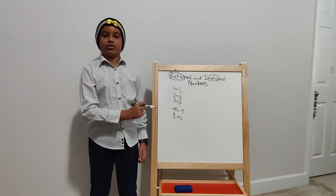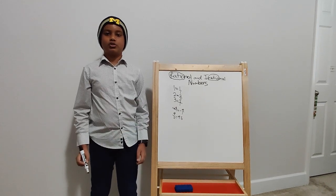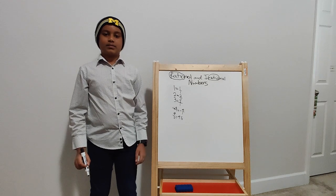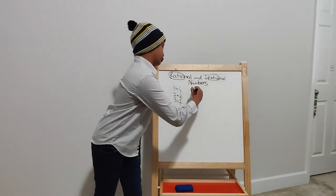These are rational numbers. But what can we do with irrational numbers? Some examples of irrational numbers include pi.